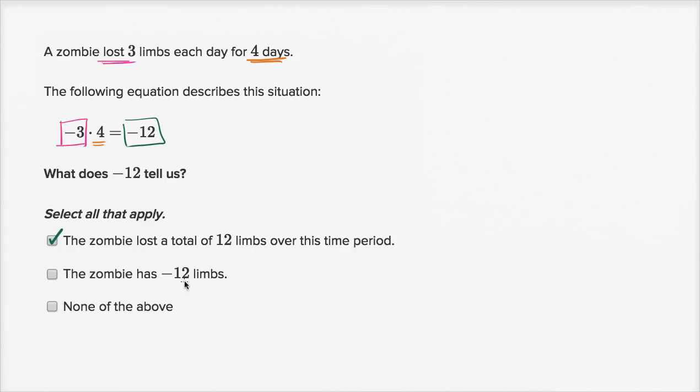The zombie has negative 12 limbs. Well, no, to have negative 12, I don't even know what a negative limb would be. We don't know how many limbs the zombie started with. The zombie, I don't know if it might be some type of centipede zombie or something, it might have had 100 limbs. And if it lost 12 of them, it would now have 88 limbs. The zombie might have had 12 limbs, and now it has zero limbs. In fact, I don't even know how you get to negative limbs. So I don't think this makes sense. I'm not going to pick none of the above, because I agree with this first choice.